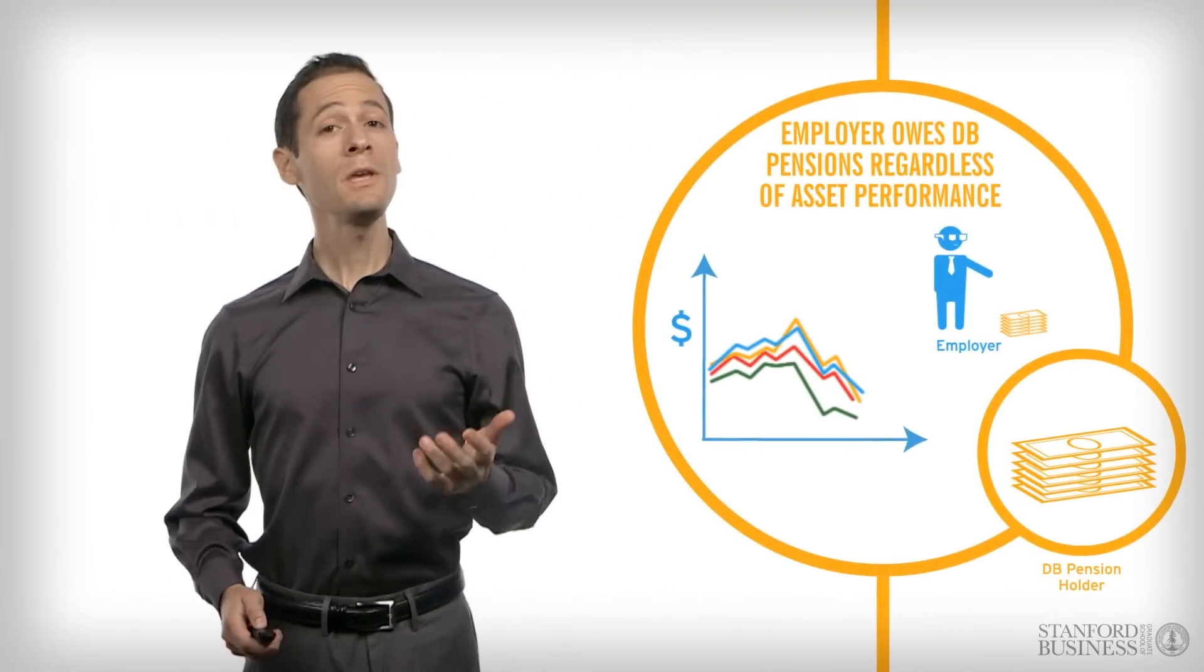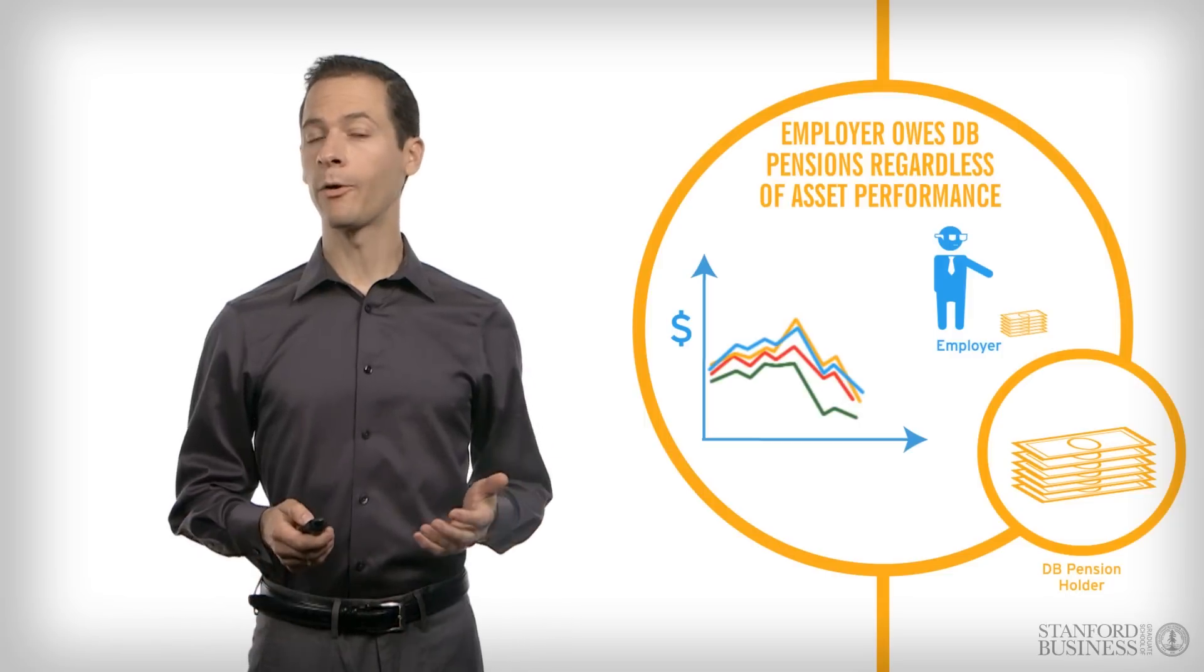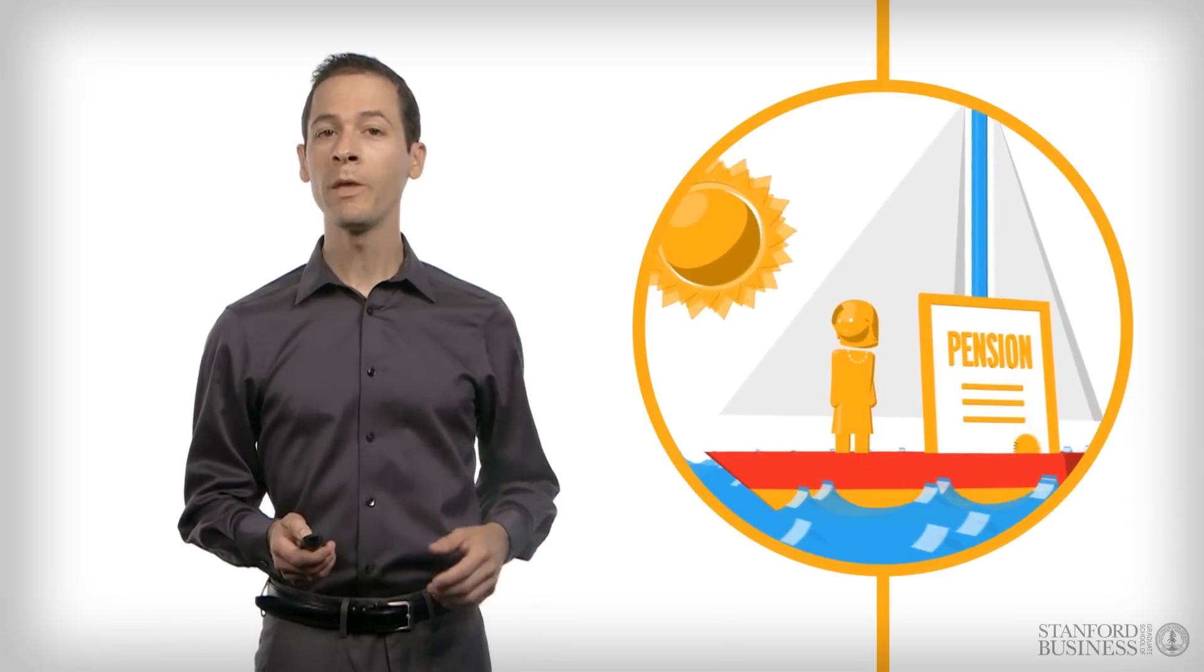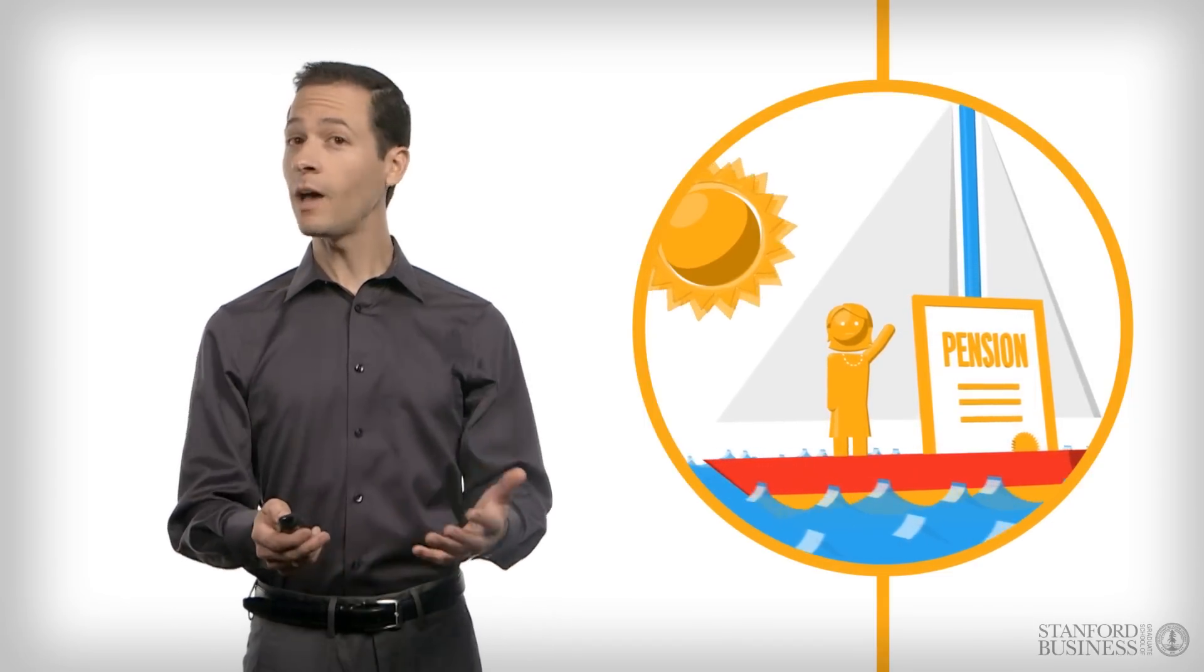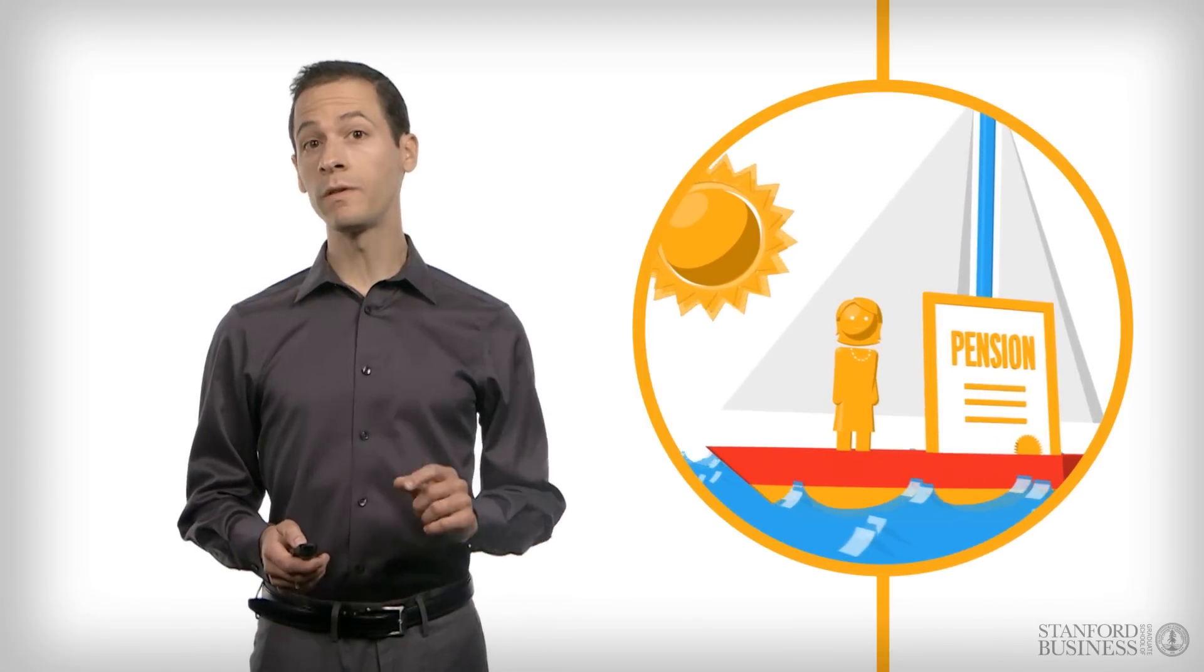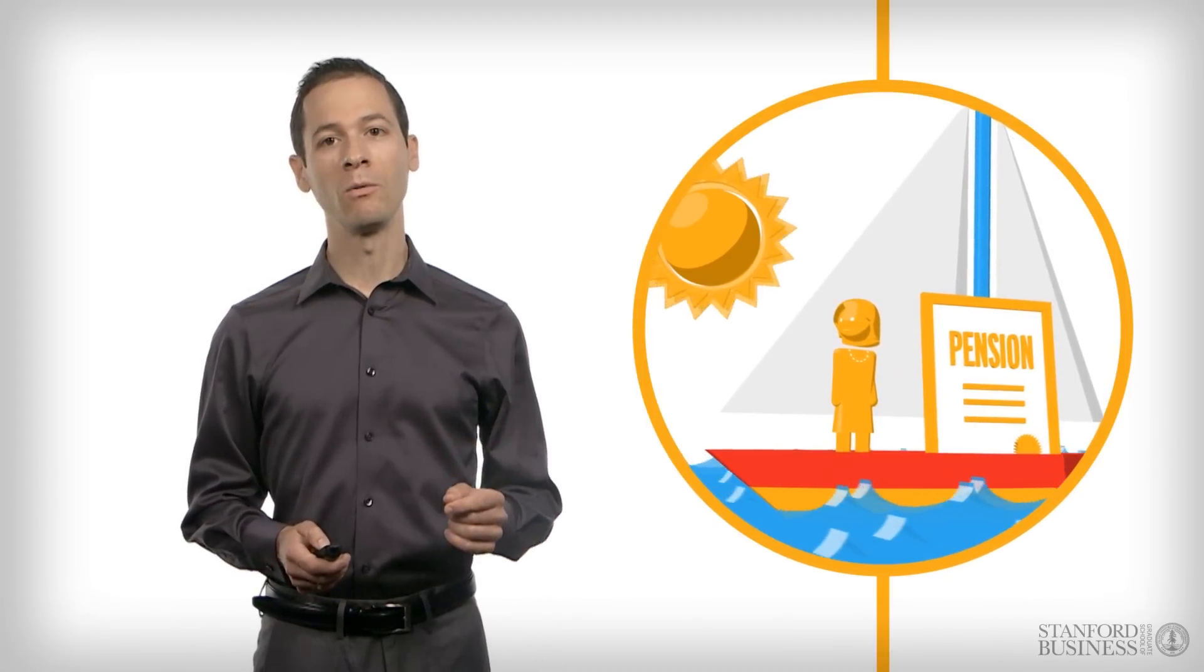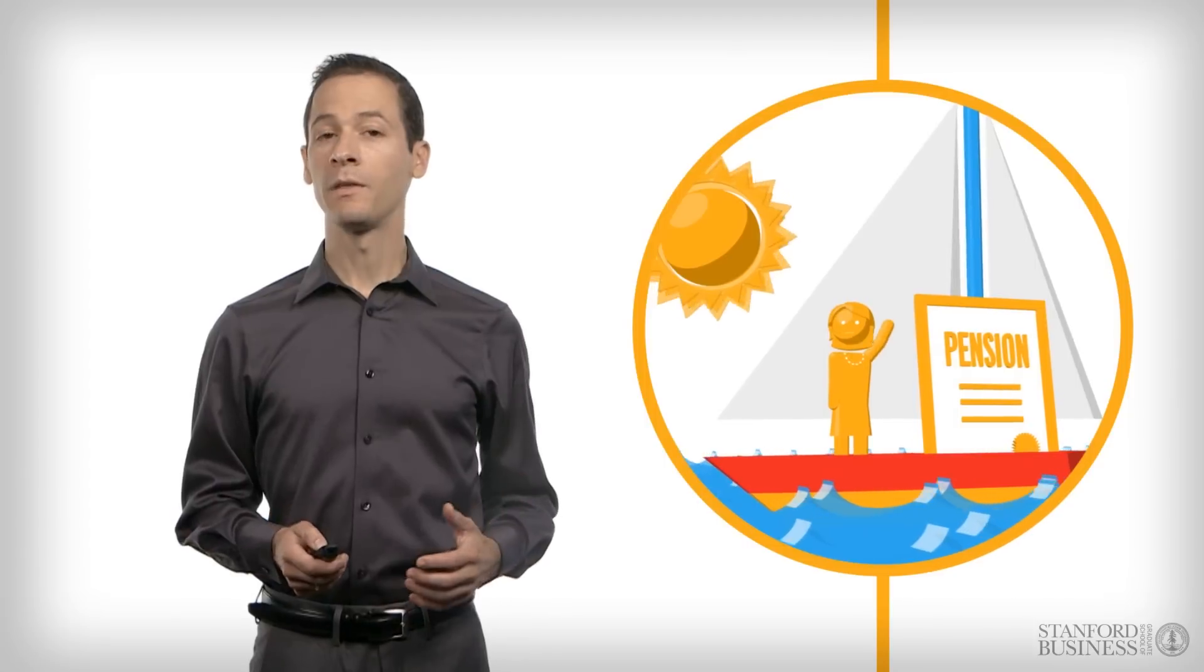So if the employee is expecting a pension that would allow her to, say, buy a boat, whether a small one or a large one, and the assets in the employer's DB pension fund perform less than expectations, the employee does not have to scale back her plans to buy the boat. The employer, or you, the taxpayer, must come up with the money, one way or another. If it's a government, then out of increased revenue or spending cuts.